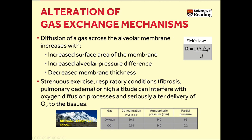Relating back to Fick's law, the diffusion of gas across the alveolar membrane increases with the surface area of the membrane, increases with an increase in alveolar pressure differences, but decreases when the diffusion membrane increases in thickness. Various factors that alter these parameters can impact the ability of gases to diffuse. Strenuous exercise or respiratory conditions such as fibrosis or pulmonary edema, or even high altitude, can interfere with oxygen diffusion processes and alter the delivery of oxygen to tissue.